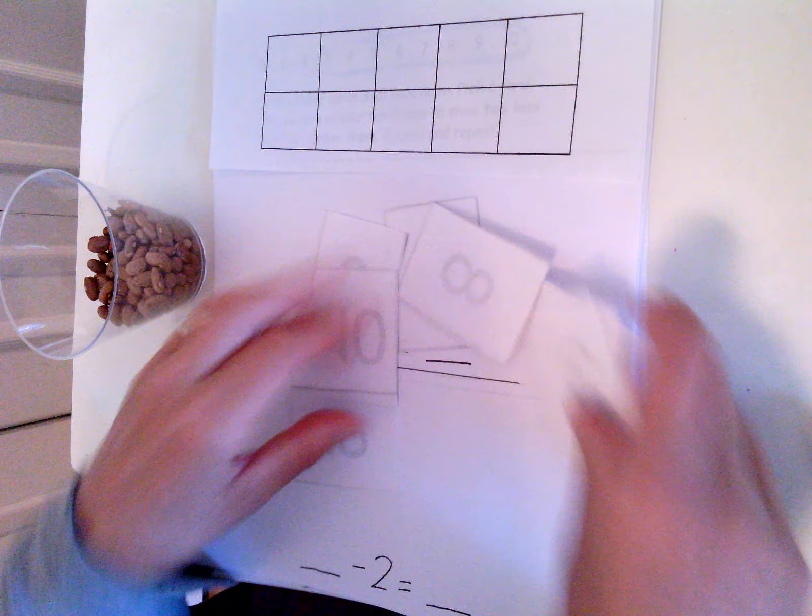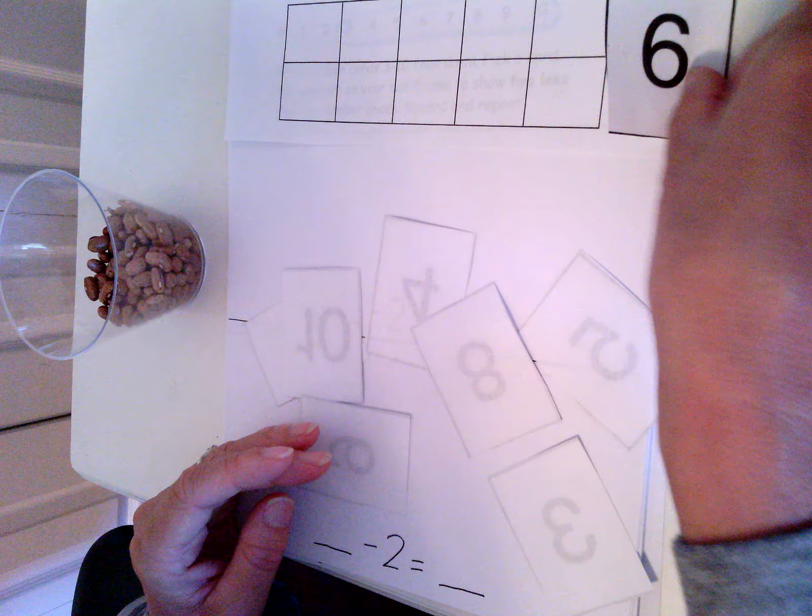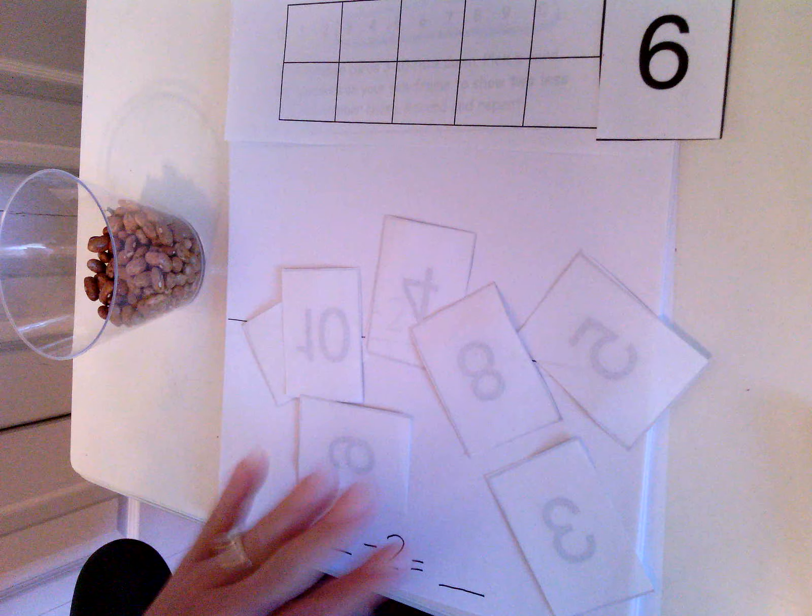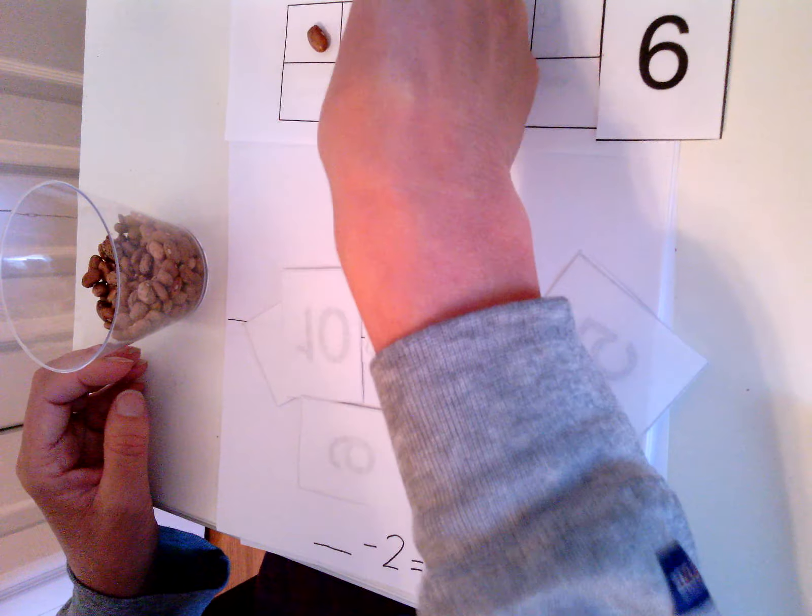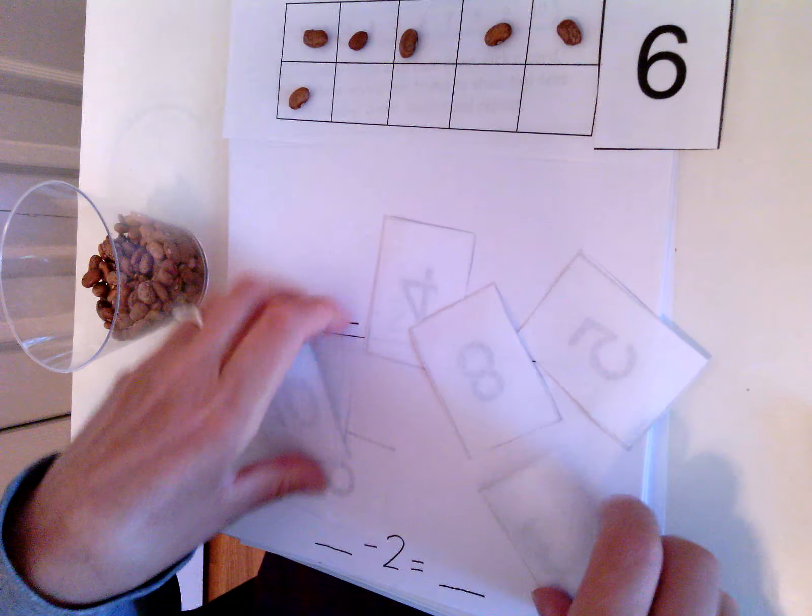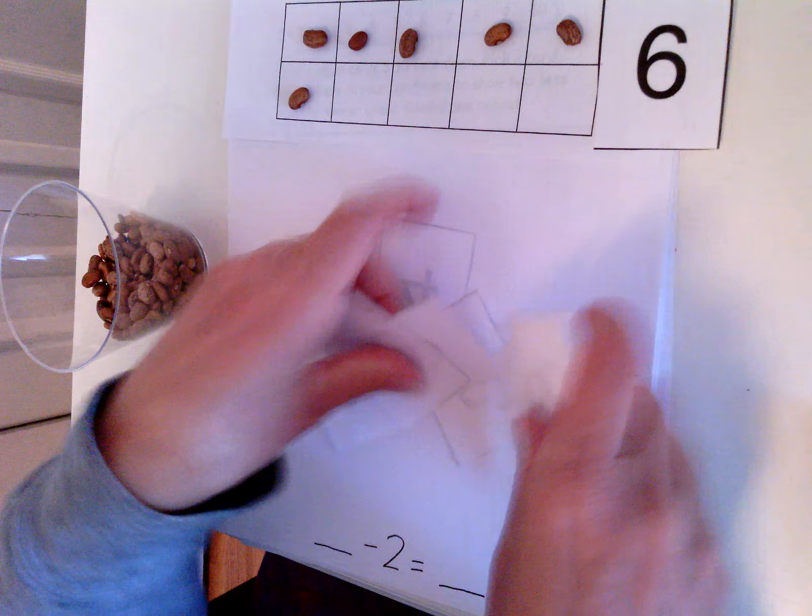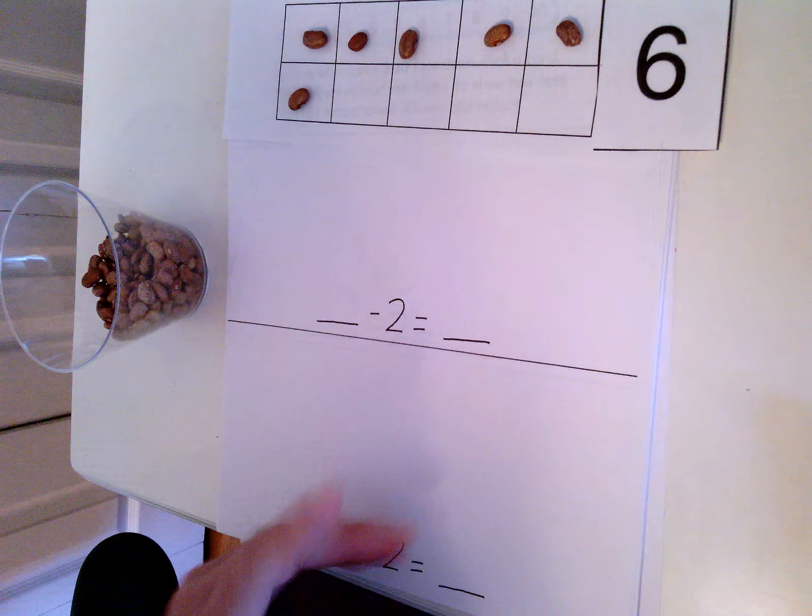Pick a card. I picked six, so I'm going to put six counters on my ten-frame: one, two, three, four, five, six. Now this time I want to know what two less is, so...